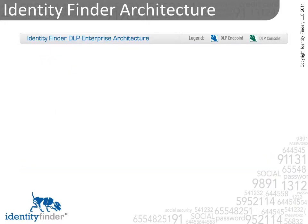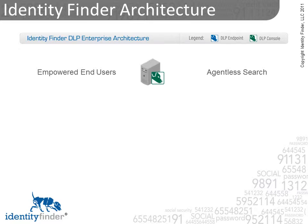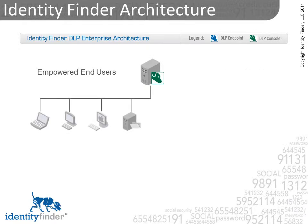Identity Finder's architecture is flexible and can be configured to adapt to your unique business needs. Consider these two options: empowered end users and agentless searching. In either architecture, you may centrally manage your deployment using the Identity Finder DLP Enterprise console and receive centralized reporting from all devices through your entire enterprise network. If you wish to empower your end users to maintain their own systems, Identity Finder is installed on each laptop, desktop, PC, Mac, or server.